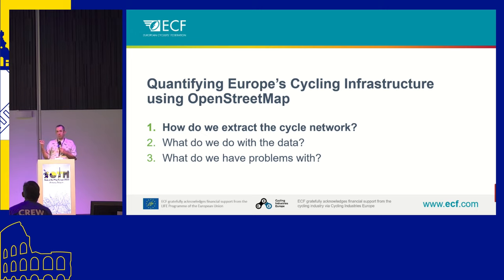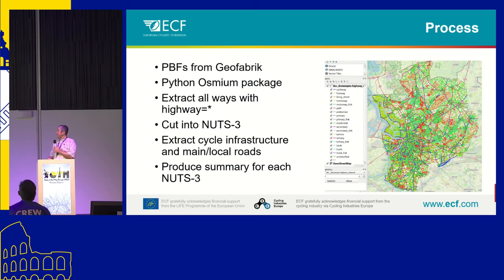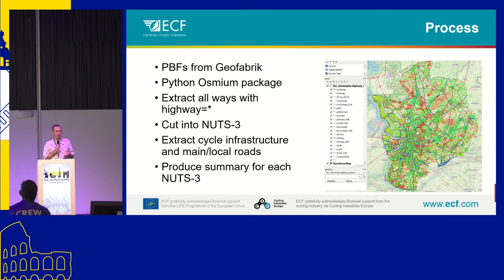I want to talk about how we extract the cycle network, what we do with this data, and finally what problems we have — which maybe you can help me with. The process, the pipeline: once every few months we get the PBFs from Geofabrik. We use the Osmium package to extract all highways from that.